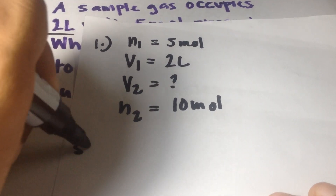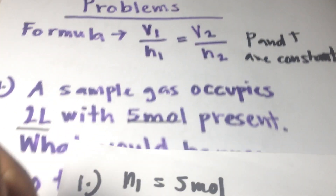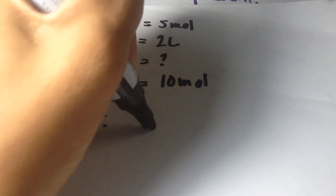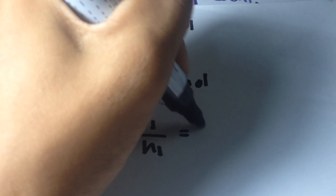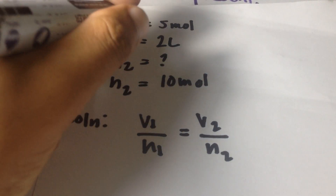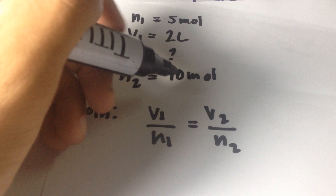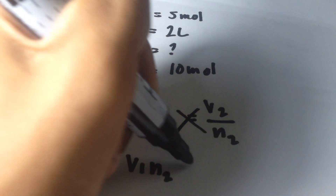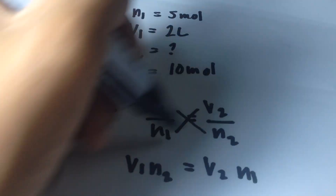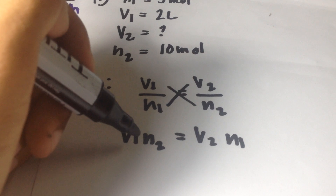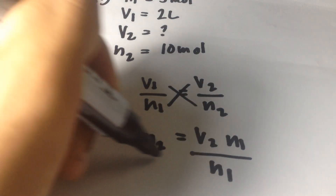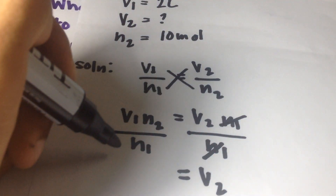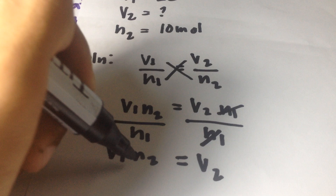This is the solution. The formula is V1 over N1 equals V2 over N2. Let's find volume 2. Cross multiply: V1 times N2 equals V2 times N1. To find volume 2, divide both sides by N1 and cancel out N1. So, volume 2 equals V1 times N2 over N1.